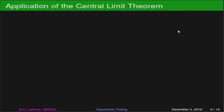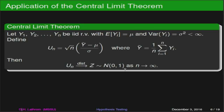One of the major players anytime you're talking about statistics is the central limit theorem. If we've got random variables y1, y2, up to yn that are independent identically distributed, each with an expected value of mu and a finite variance of sigma squared, then if we take the average of those values, subtract mu, and divide by sigma over root n, this new random variable U-sub-n — as n goes off to infinity — approaches the standard normal distribution. That's going to be one of our key players, as always.